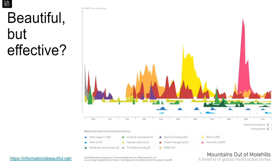So what do we mean by effective? We don't necessarily mean beautiful. Here is an example of a visually appealing graph from David McAnlis, a data artist and journalist from the UK. The visualisation is called 'Mountains Out of Mole Hills,' a timeline of global media scare stories. It attempts to investigate the number of news story reports and whether there is a sense of overreporting that could cause unnecessary panic. It covers earlier pandemics such as SARS, bird flu, and swine flu, but also video games and killer wasps.